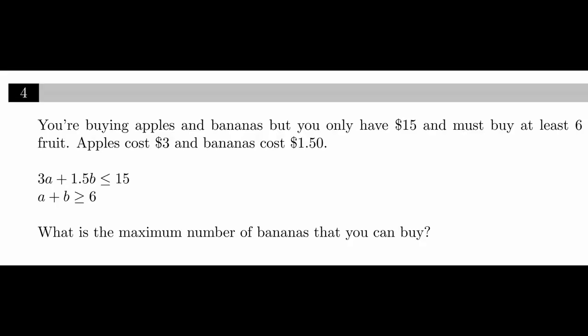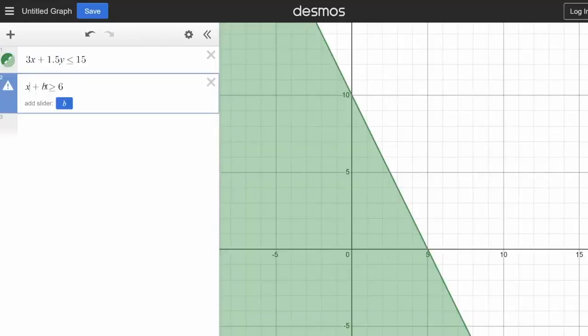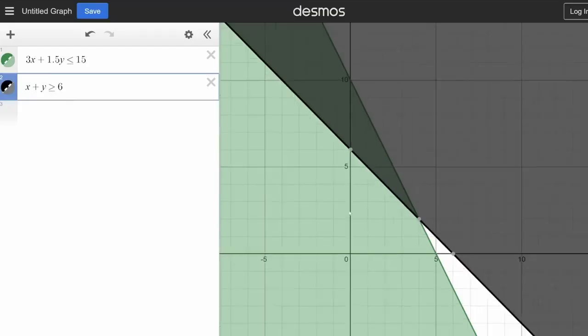Now, the SAT might ask questions that give you an inequality in context. So in this scenario, we're buying apples and bananas, but we have a price constraint and a quantity constraint. And price and quantity constraints are a very common problem type you'll see on the SAT. This question is not just asking what is a valid point for this inequality. It's specifically asking for the maximum number of bananas. So the way we would do this is first we'd want to graph our inequality. We can't use A's and B's because Desmos thinks those are constants, so we have to use X's and Y's.